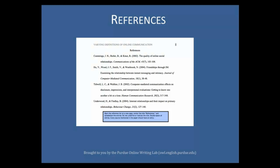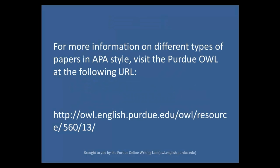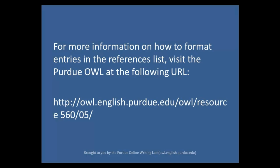Double-space the reference entries throughout. Some final notes: print your paper on white 8.5 by 11 inch paper. If you are using a word processor other than Microsoft Word 2007, search YouTube using the name of the processor you are using, such as 'Microsoft Word for Mac 2011 plus APA formatting.' For more information on different types of papers in APA style or how to format entries in the references list, visit the Purdue OWL at the URLs provided.